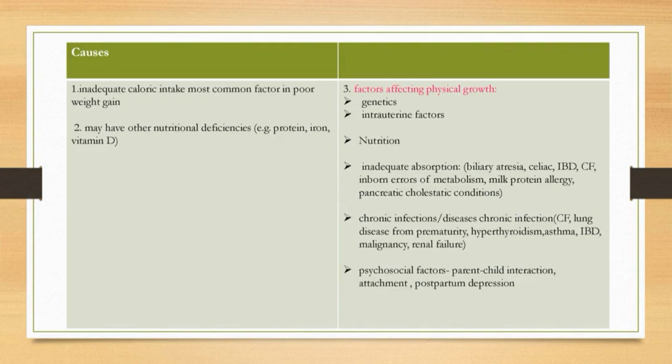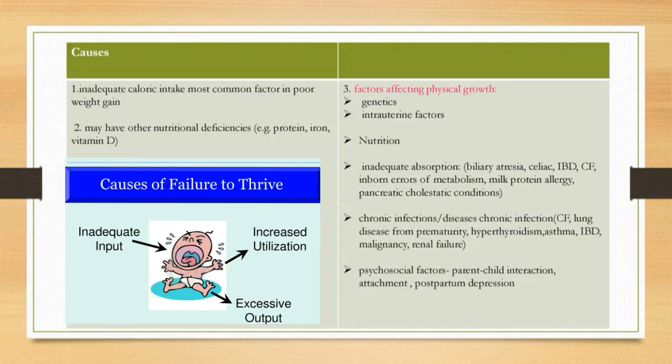Failure to Thrive causes: Inadequate caloric intake is the most common factor in poor weight gain, and may have other nutritional deficiencies such as protein, iron, and vitamin D. Factors affecting physical growth include genetic factors, intrauterine factors, and nutritional deficiencies.